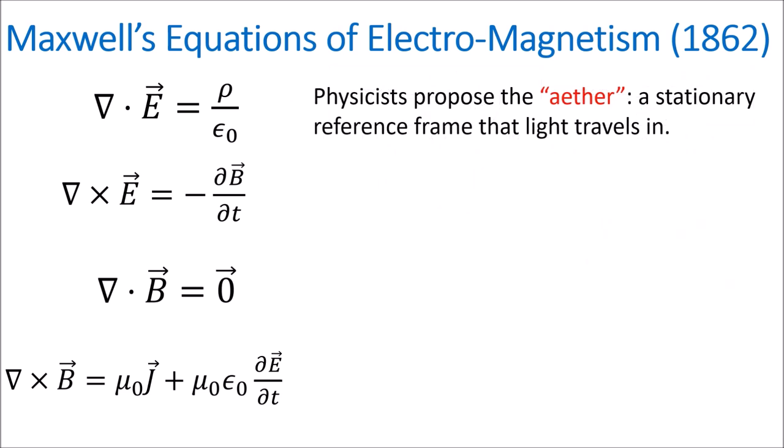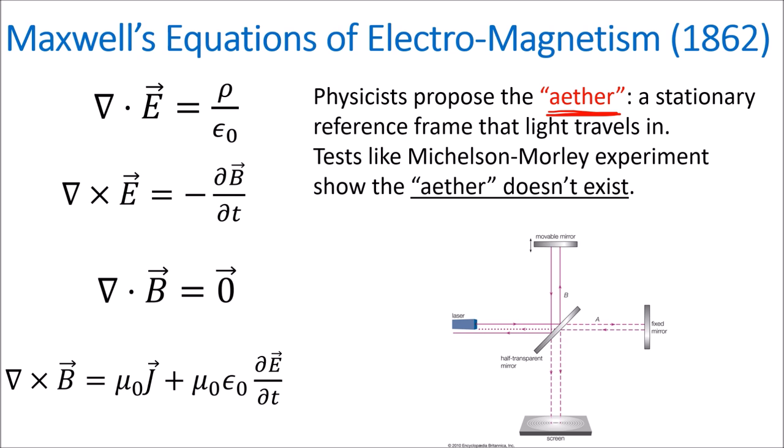To get around the problem of the speed of light being defined in a vacuum, physicists tried to propose an invisible fluid called the ether, which would be a special stationary reference frame that light traveled through. However, tests like the Michelson-Morley experiment involving light beams and mirrors showed that the ether didn't exist, leaving physicists once again with the problem of the speed of light being defined in a vacuum.